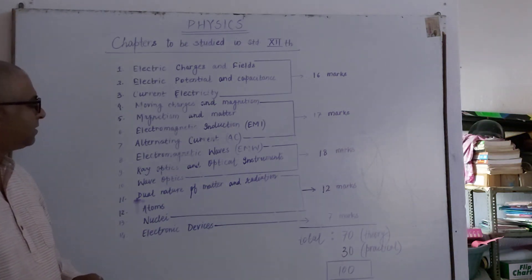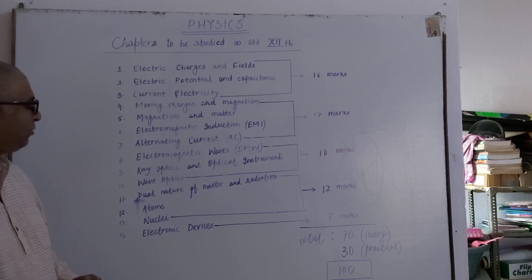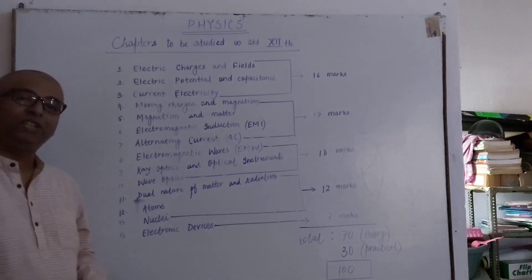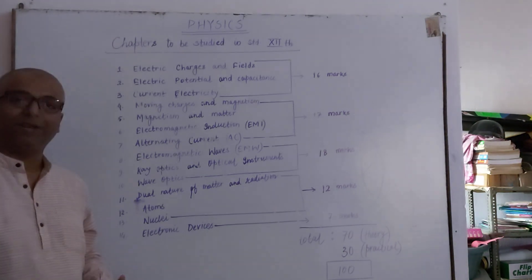Ninth chapter is Ray Optics and Optical Instruments. 10th chapter is Wave Optics. Then comes Dual Nature of Matter and Radiation. 12th chapter is Atoms. 13th chapter is Nuclei. And last, 14th chapter is Electronic Devices.